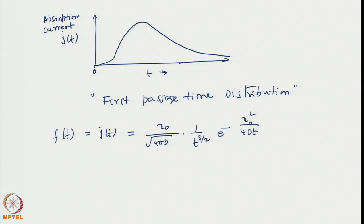Although mathematically it is equivalent to the current, seeing it as a first passage or first contact time distribution gives an additional interpretation and additional strength in handling particle transport problems when the problem is more complex — not free space, but space where the particle moves under specific forces. Then you need not solve the entire problem; it is sufficient to obtain a formula for this first passage time distribution, which is equivalent to calculating the currents.